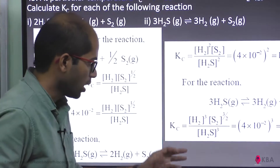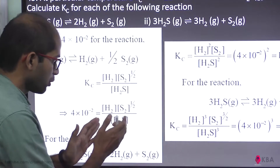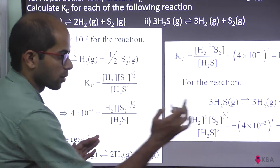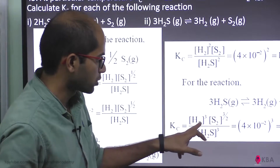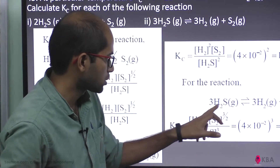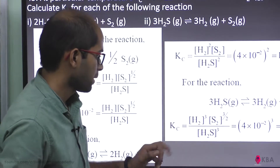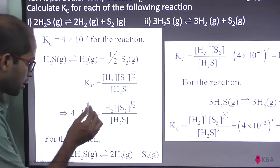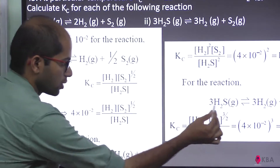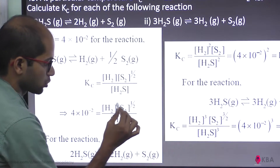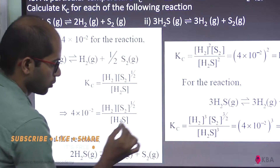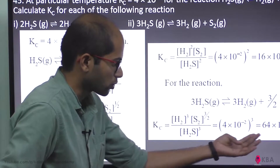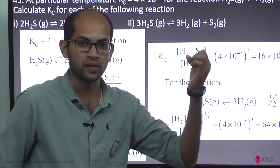For the third reaction, it is the original multiplied by 3, so we cube the Kc value. H₂ is raised to 3, S₂ is raised to 3/2, and H₂S is raised to 3. The value raised to the power 3 gives 4 × 4 × 4 = 64 into 10 to the power minus 6, since (10⁻²)³ = 10⁻⁶.